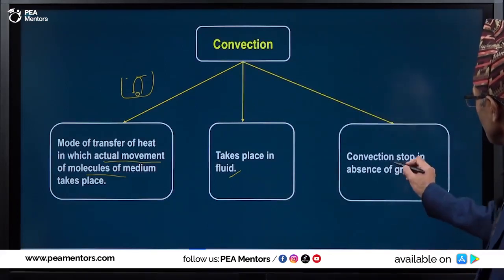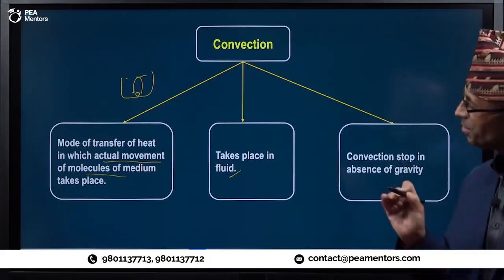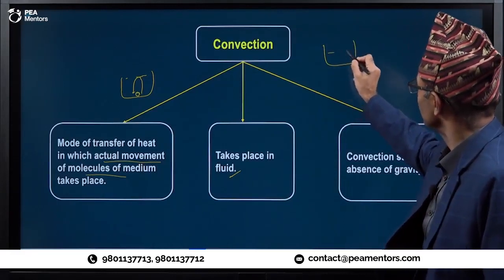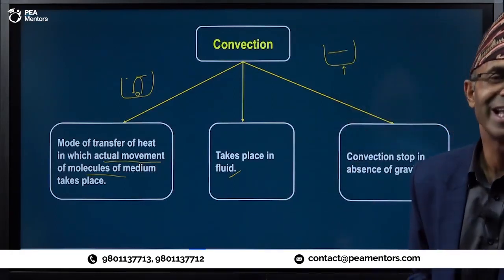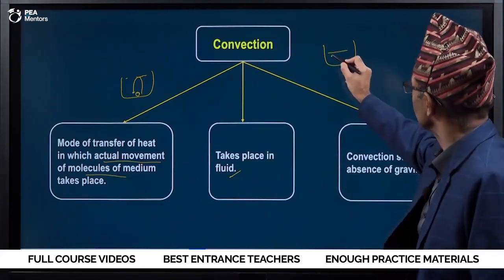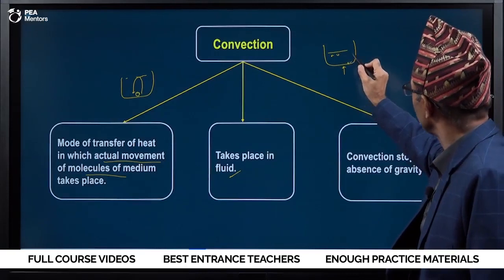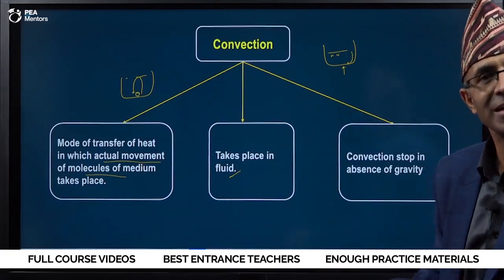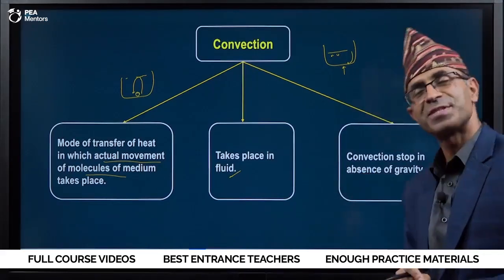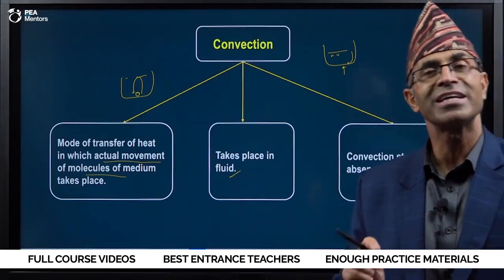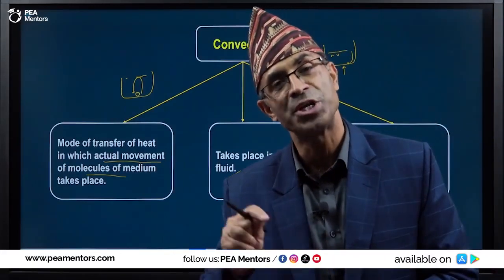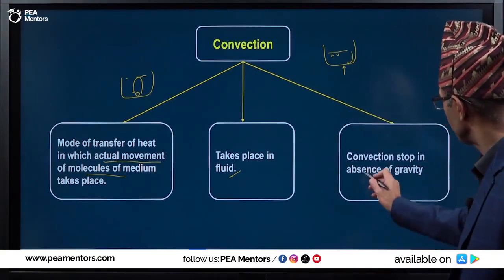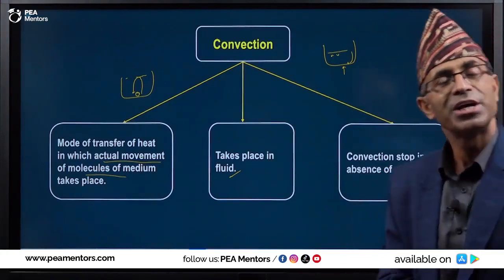This is the heat of the water, and the artificial satellite will not be able to get into the water — it will not be able to get into the water. This is convection stopped. In absence of gravity, heating water in an artificial satellite is possible due to conduction, not convection. Gravity is required for convection.